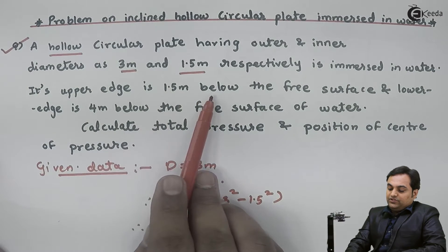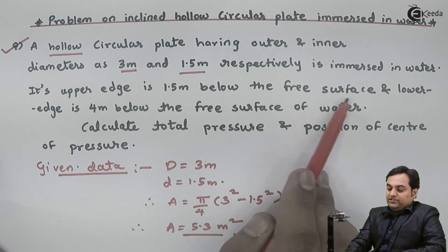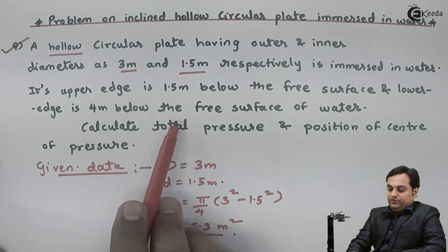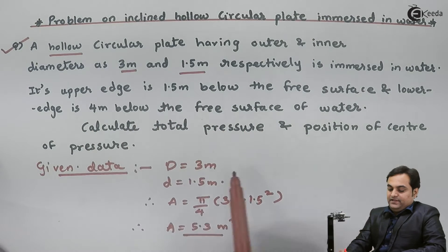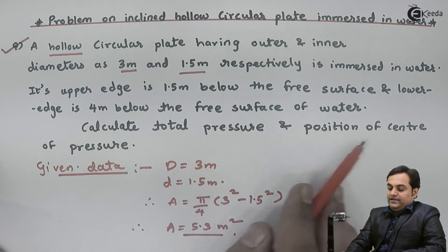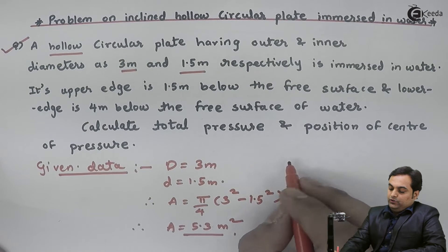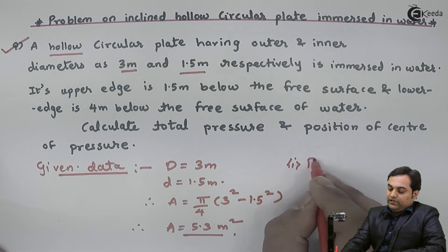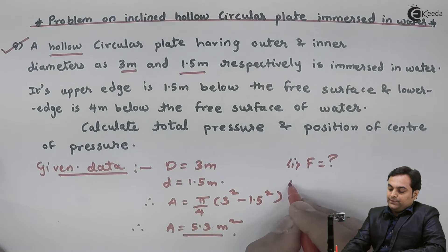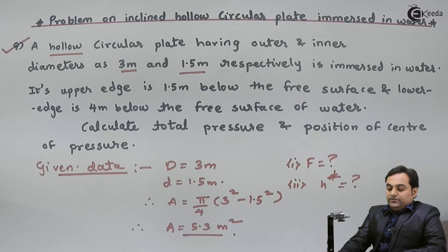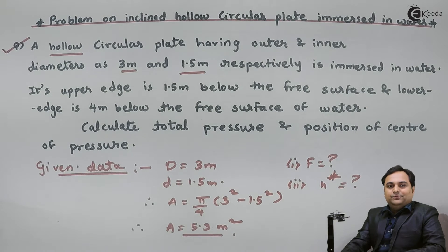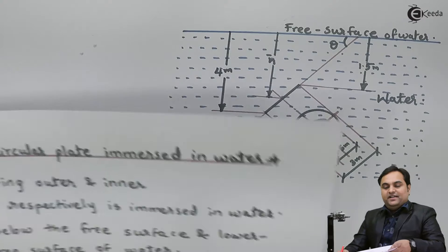It is given that the upper edge is 1.5 meter below the free surface and the lower edge is 4 meter below the free surface, which I will show on the diagram. We need to calculate total pressure, which means finding the hydrostatic force F, and position of center of pressure, which means we need to calculate H star.